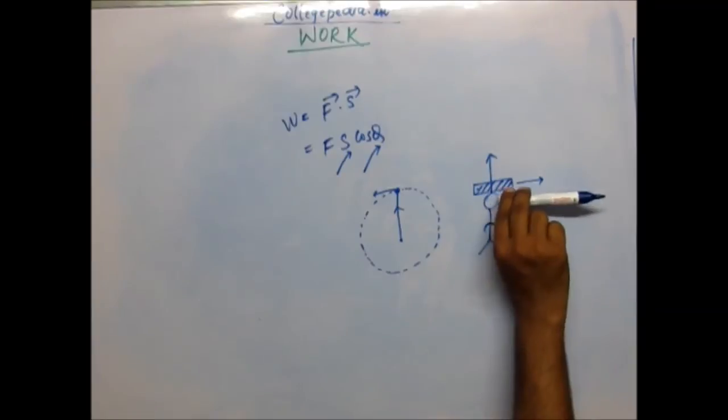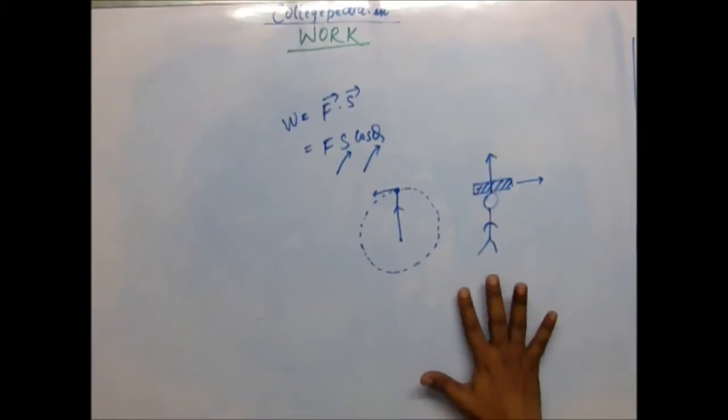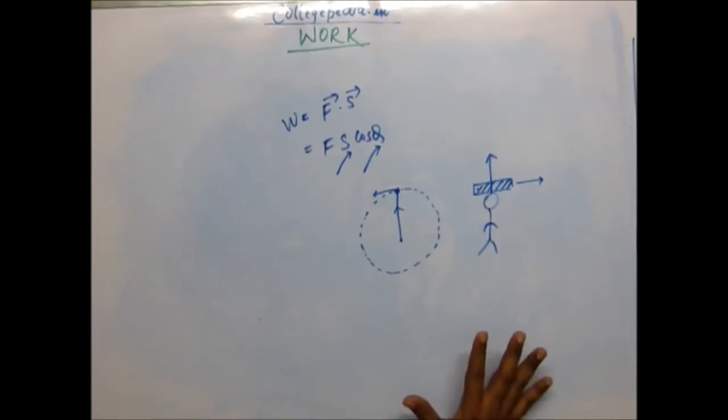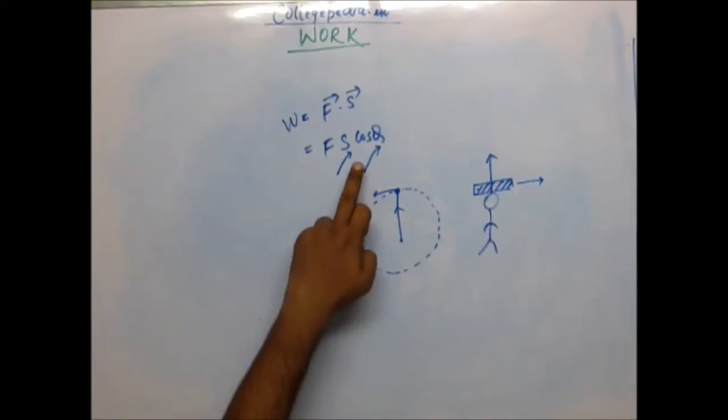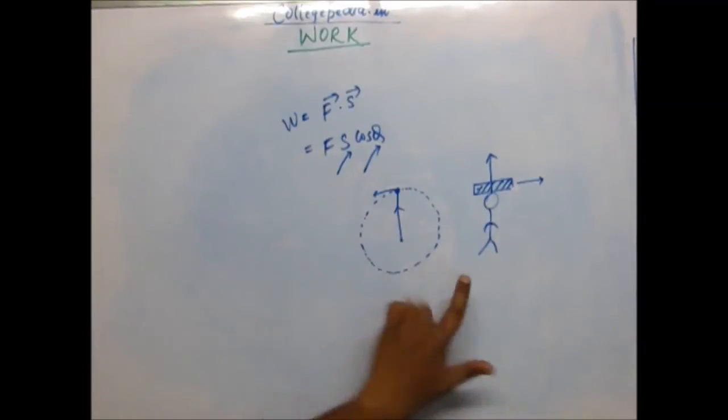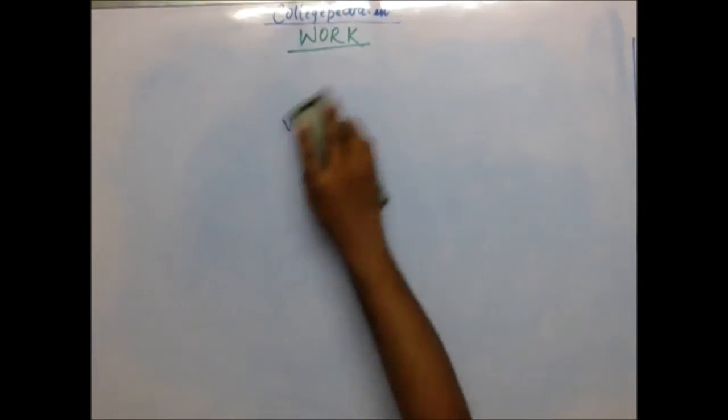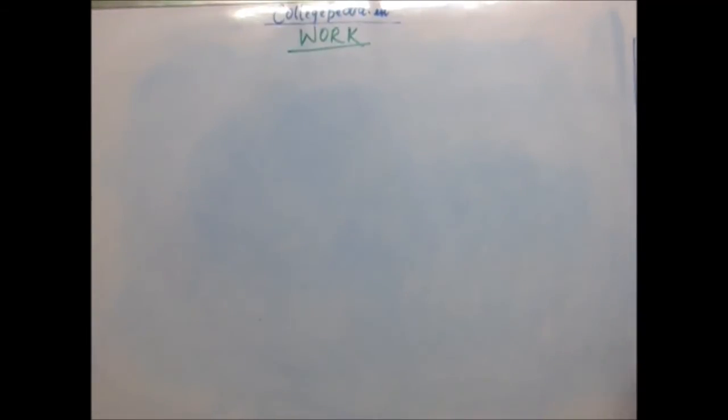This is the force which is vertically upward and this is a displacement which is horizontal. The angle between them is clearly 90 degrees, so even though the coolie would be spending much of his energy carrying this block on his head, in the physical sense, in the definition we have adopted, this coolie has not done any work because cos θ is going to make everything zero, since cos 90 is zero. Work done in this case will be zero.